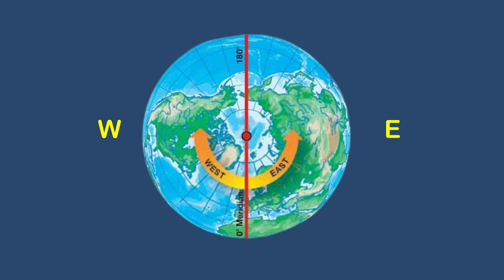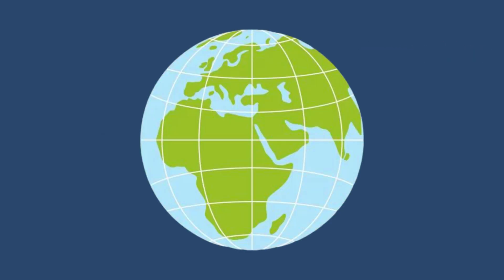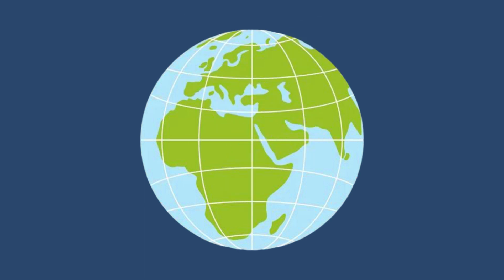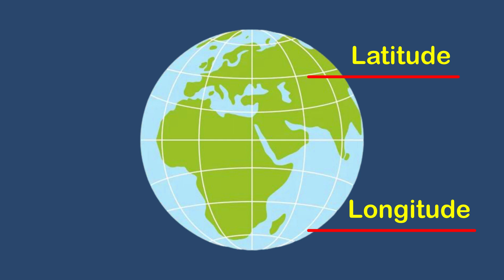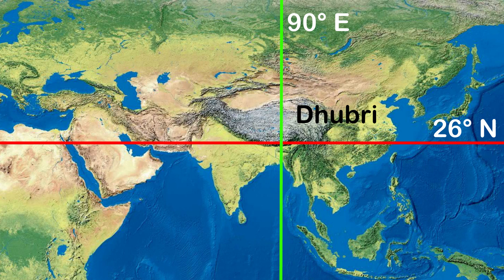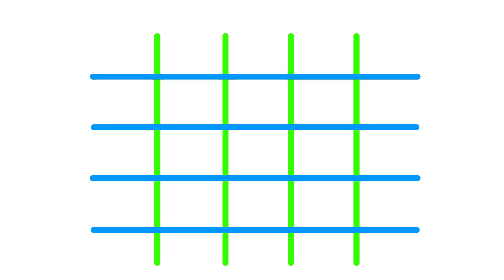It is interesting to note that 180 degrees east and 180 degrees west meridians are on the same line. Now, looking at the grid of parallels of latitude and meridians of longitude on the globe, you can locate any point very easily if you know its latitude and longitude. For example, Dhubri in Assam is situated at 26 degrees north latitude and 90 degrees east longitude. Find out the point where these two lines cut each other — that point will be the location of Dhubri.